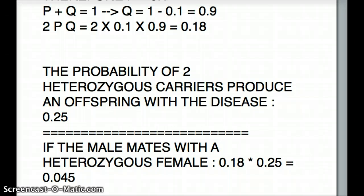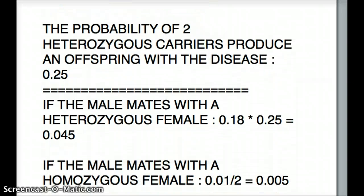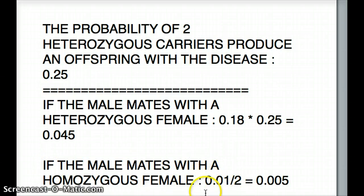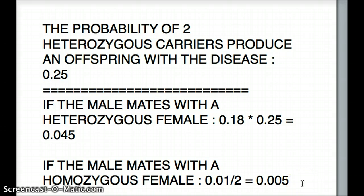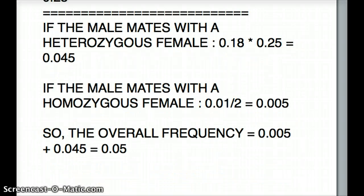For the homozygous female case, the probability is 0.01 ÷ 2 = 0.005. The question asks for the probability when the father is heterozygous and the mother is from the general population, so we add both contributions together for the final answer.